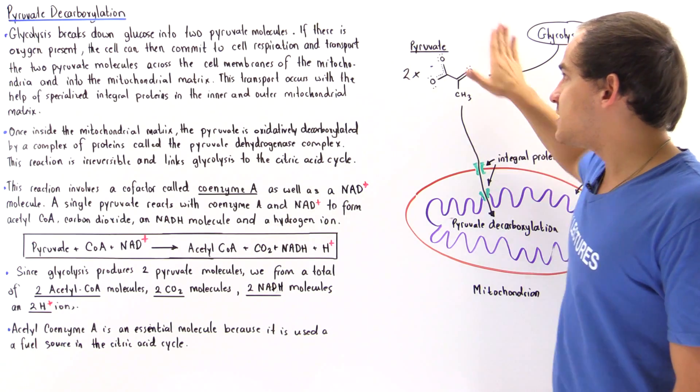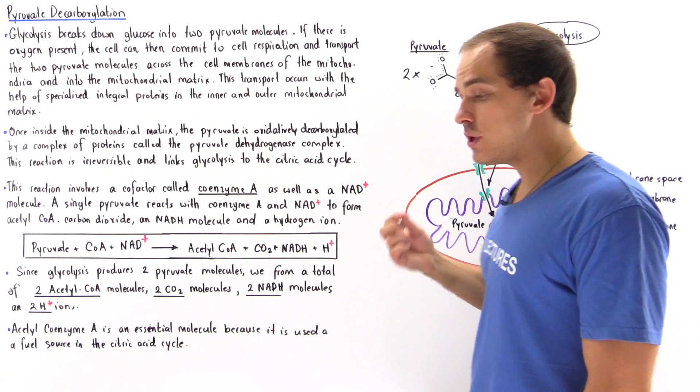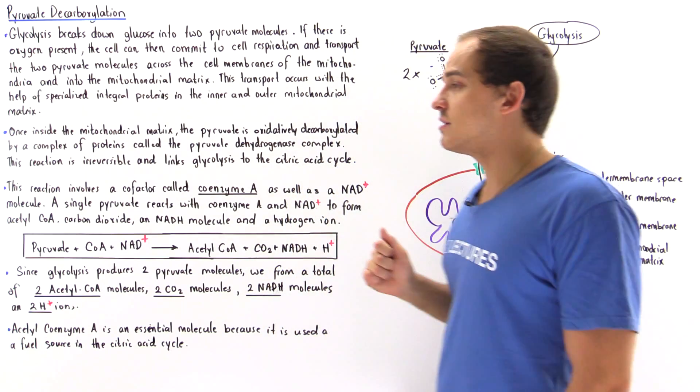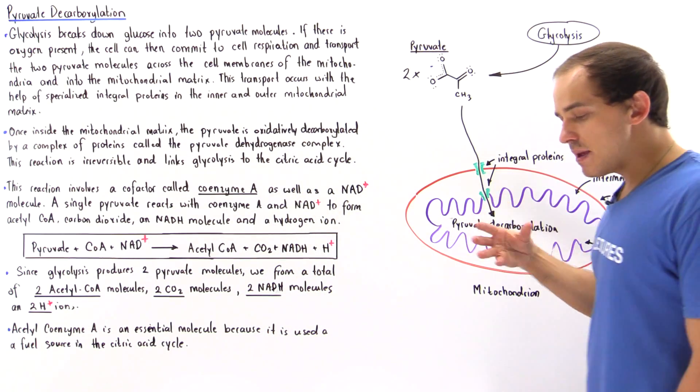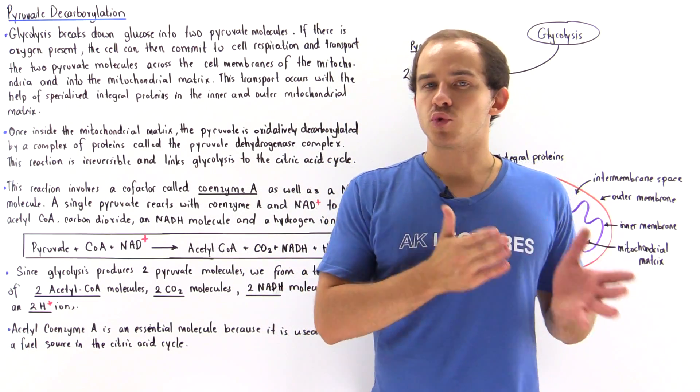Once these pyruvates are formed in the cytosol, if we have oxygen present in the cell, the cell can undergo a process known as cellular respiration.